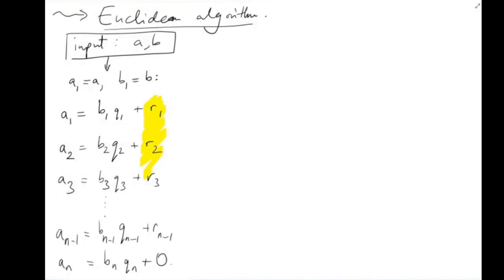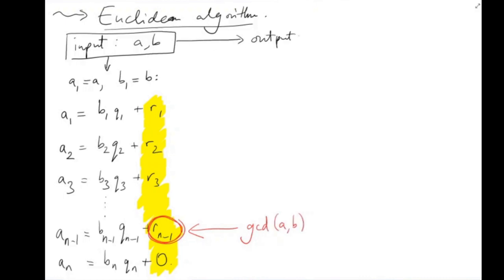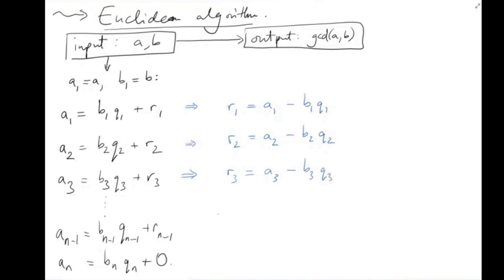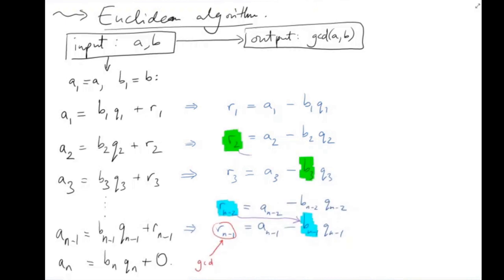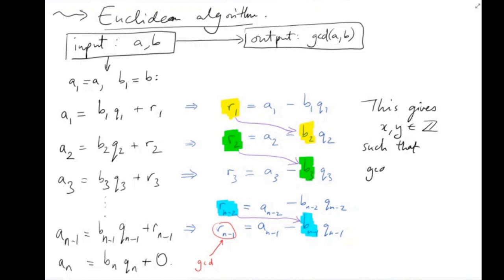By definition, the numbers in this column will always be decreasing in size, so they eventually hit 0, and that tells us that this number here is the greatest common divisor of A and B. We can rearrange these equations, and by repeated substitution we get integers X and Y such that the greatest common divisor of A and B can be written as AX plus BY.